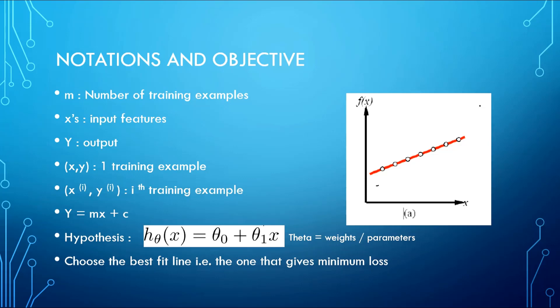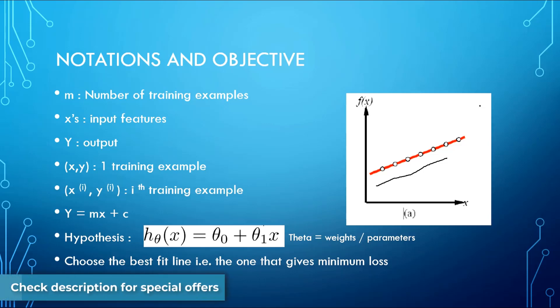For example, our algorithm predicted a line that would give a very big amount of loss because for each input it is not being able to correctly predict the output. So, dealing with visualization, we would define Linear Regression as an algorithm which finds the best fit line through our training data. Mathematically, it finds the perfect linear function that maps our inputs to their respective outputs.